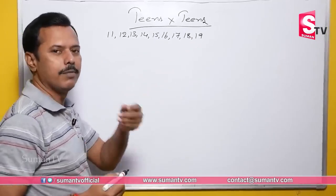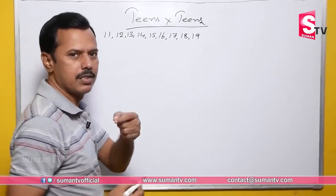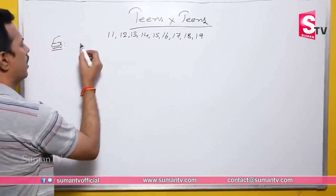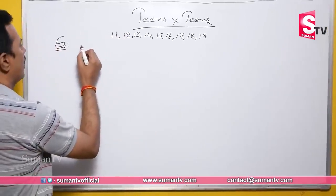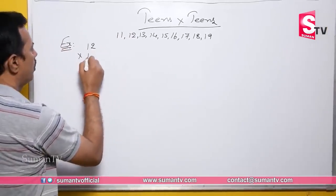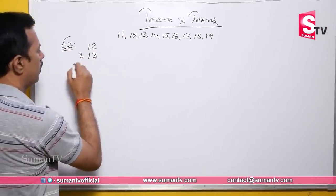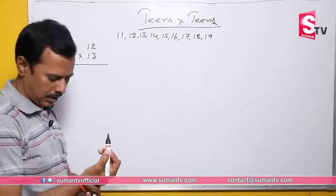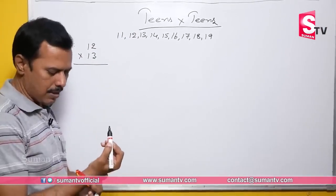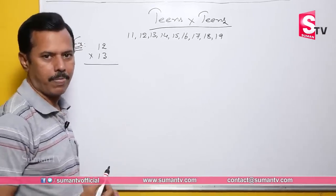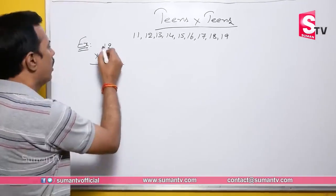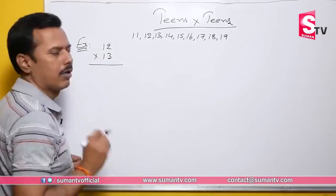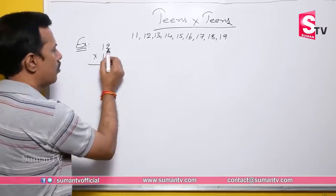This is a beautiful Vedic math trick. Let's look at a simple trick here. For example, 12 into 13. Let's see how to do this. We have 12 and 13.